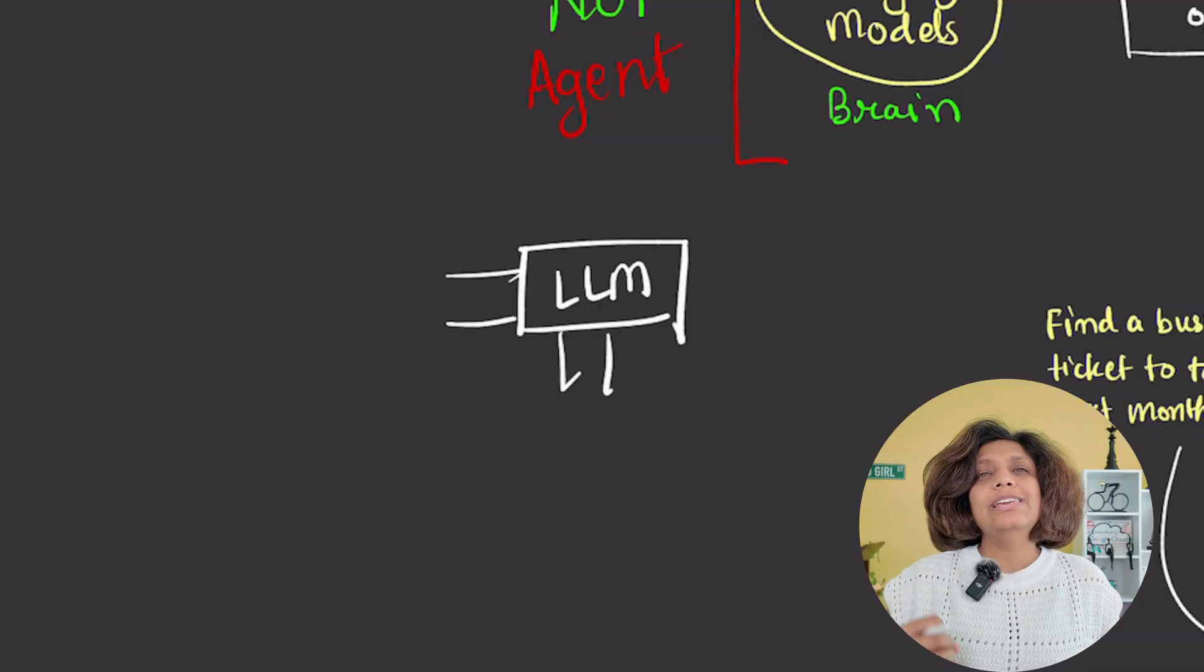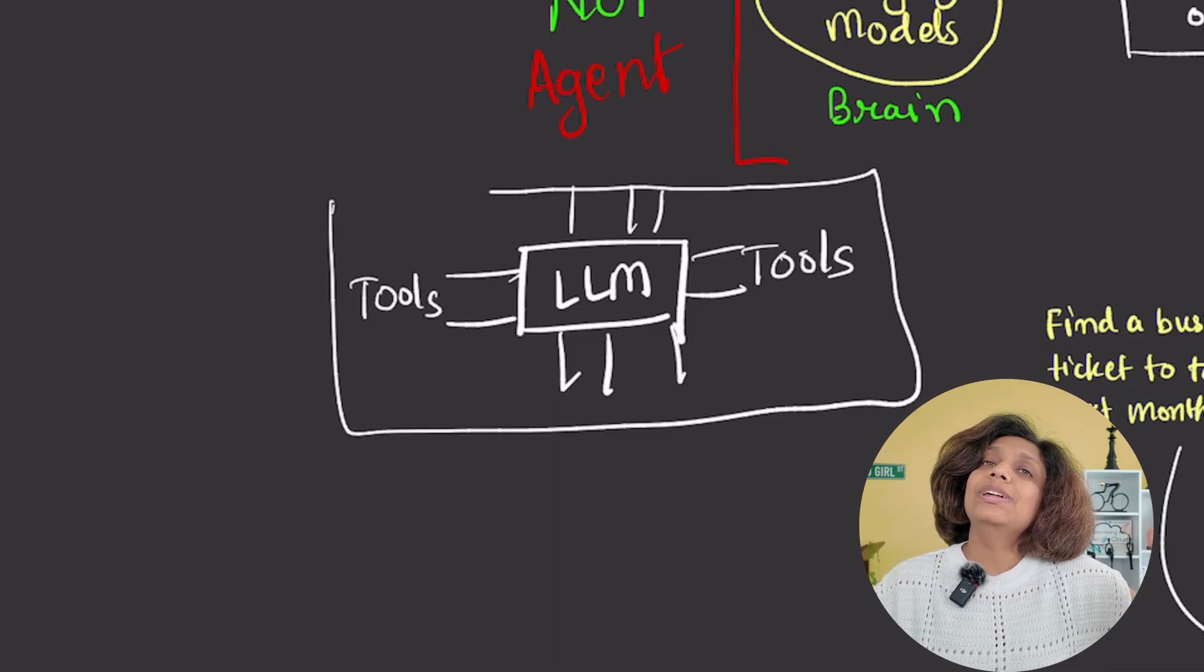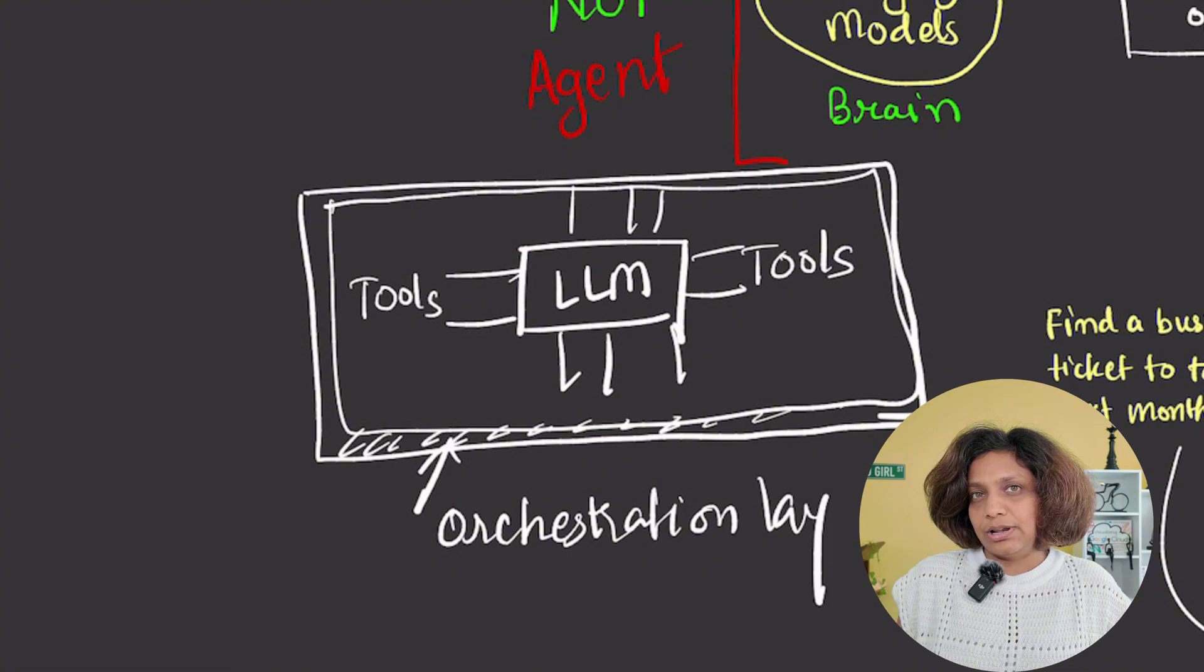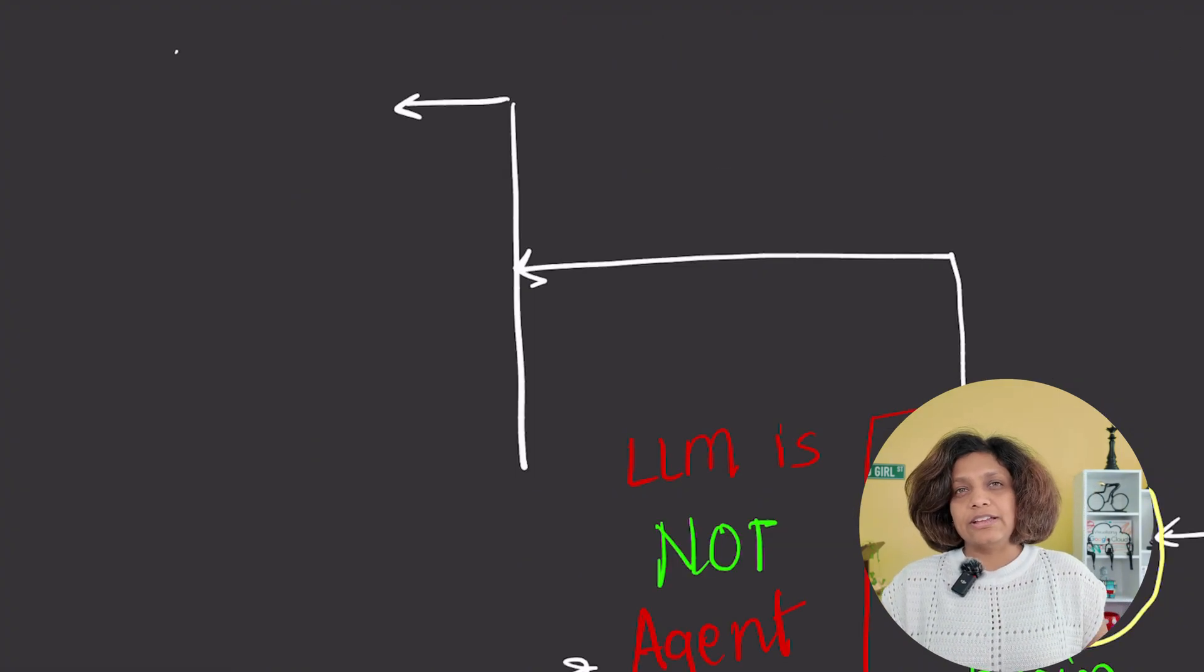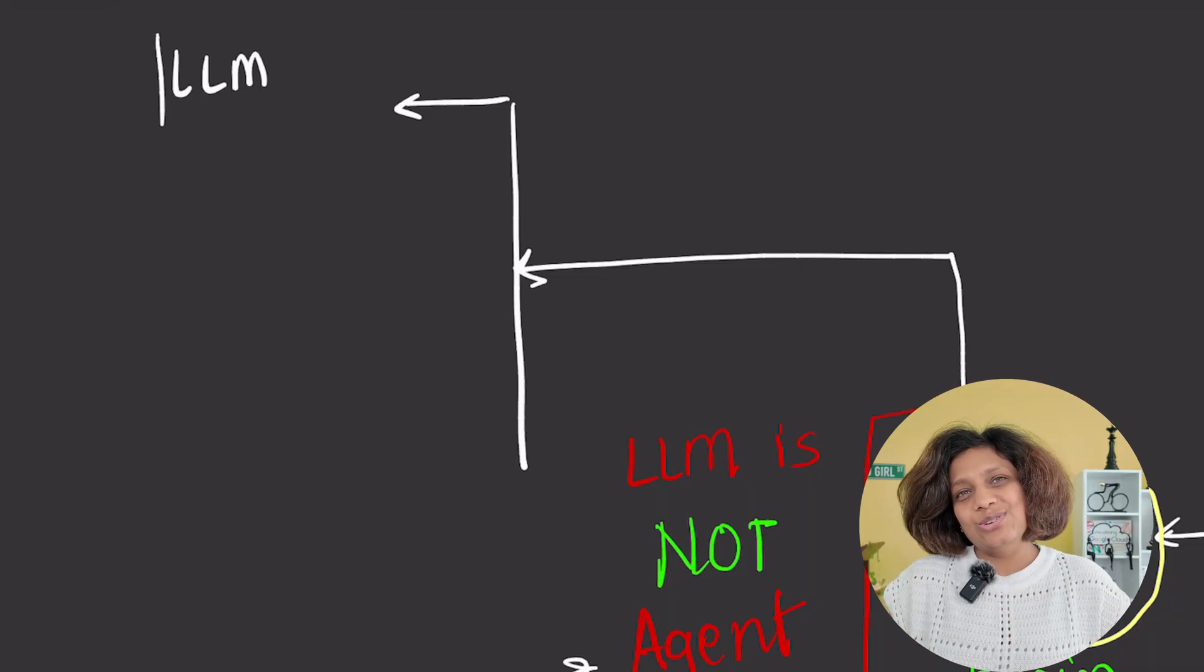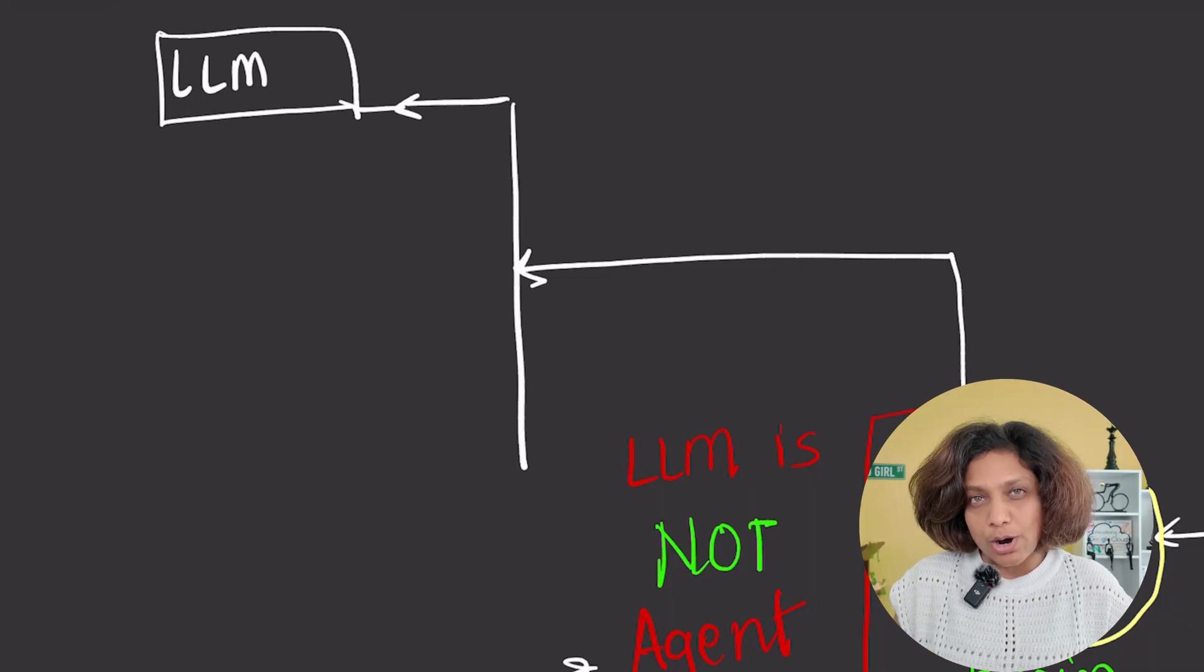They only become agents when you connect them to the tools and wrap them in the orchestration layer. When building an agent, you have several options for which brain to use, and the brain is the language model.